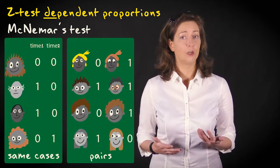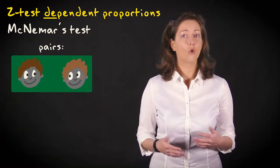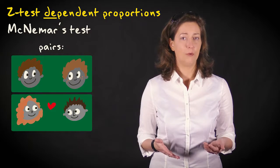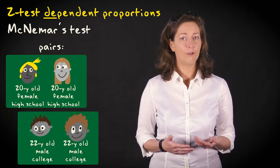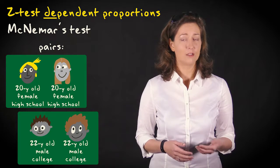These could be naturally occurring pairs such as twins or couples in a romantic relationship. The pairs can also be created based on similarity on relevant background variables such as age, sex, and education.